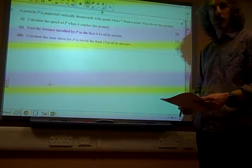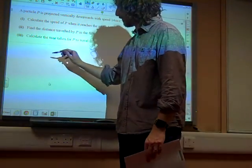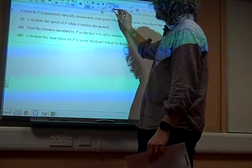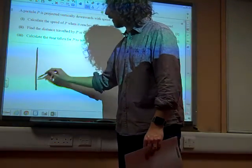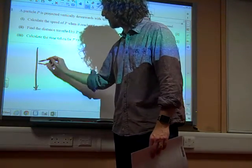Calculate the speed of P when it reaches the ground. Well, you don't need it, but I just did a little diagram because I like to draw diagrams. So there we go. We've got it projected downwards. This gap is 30 metres.